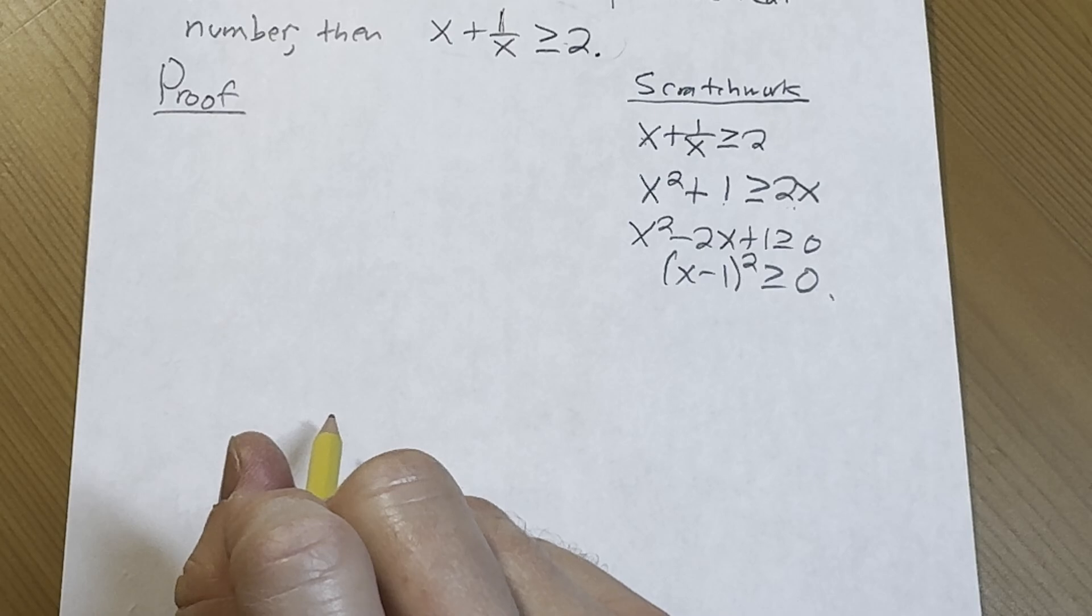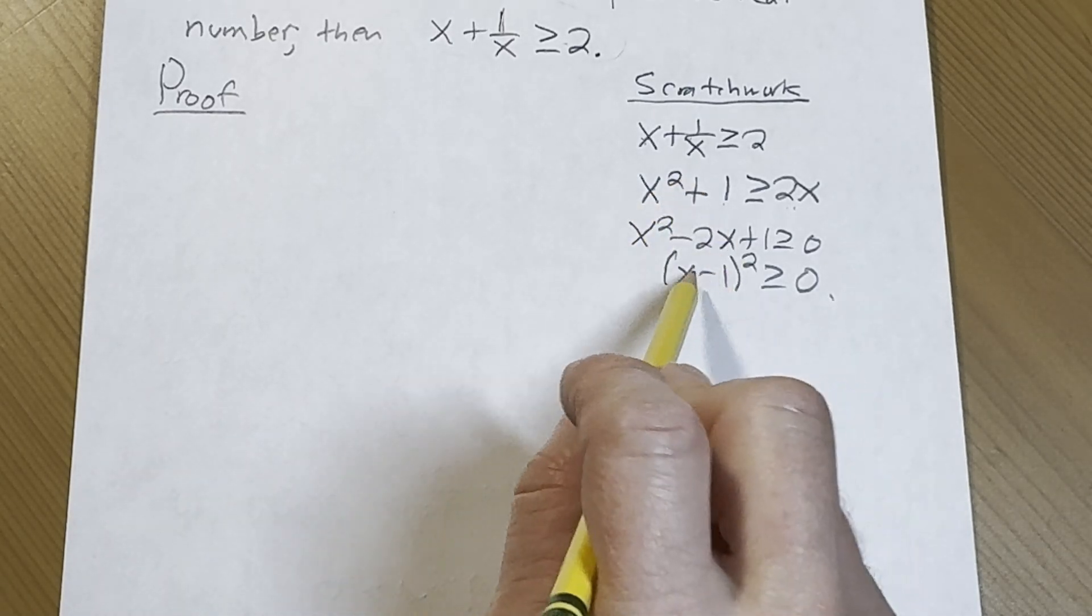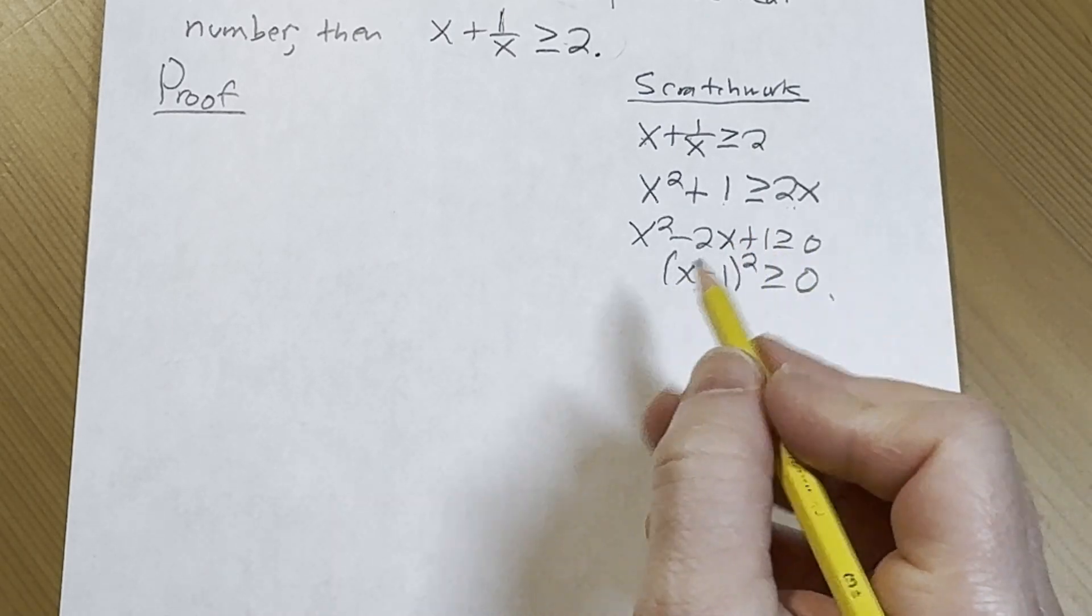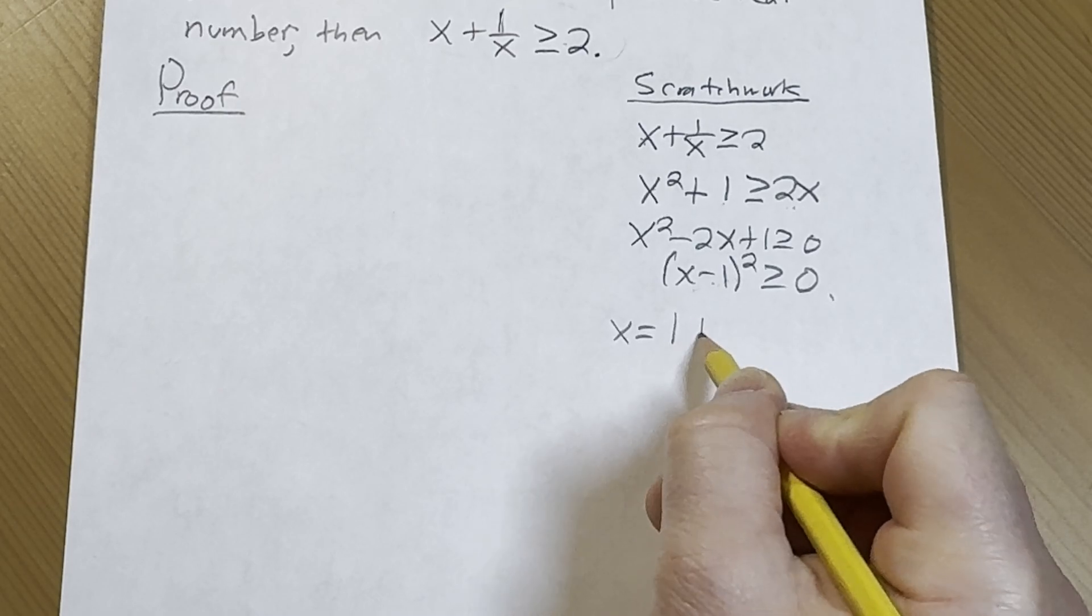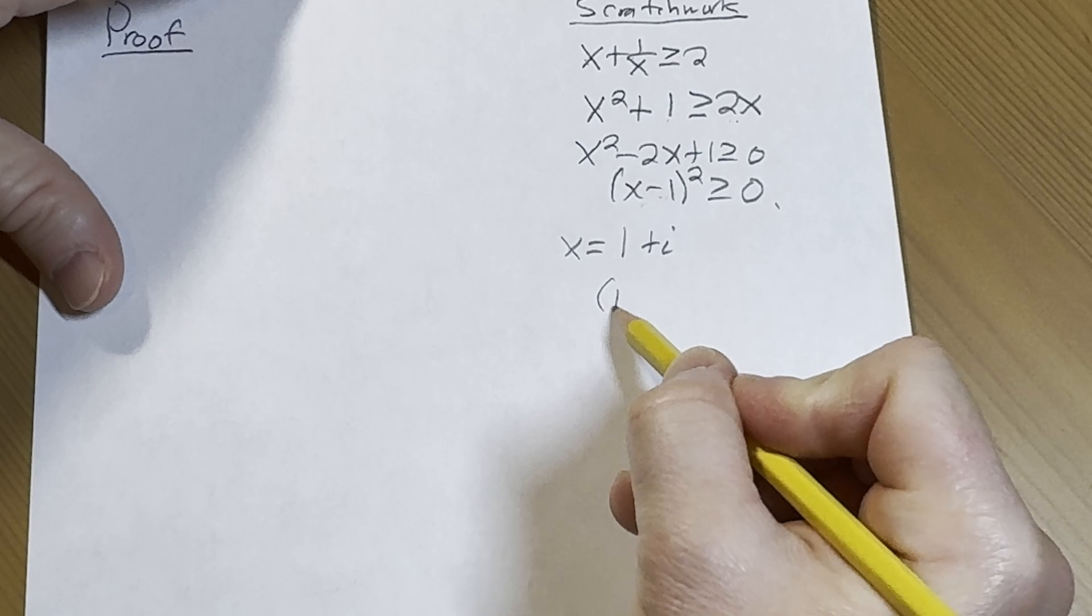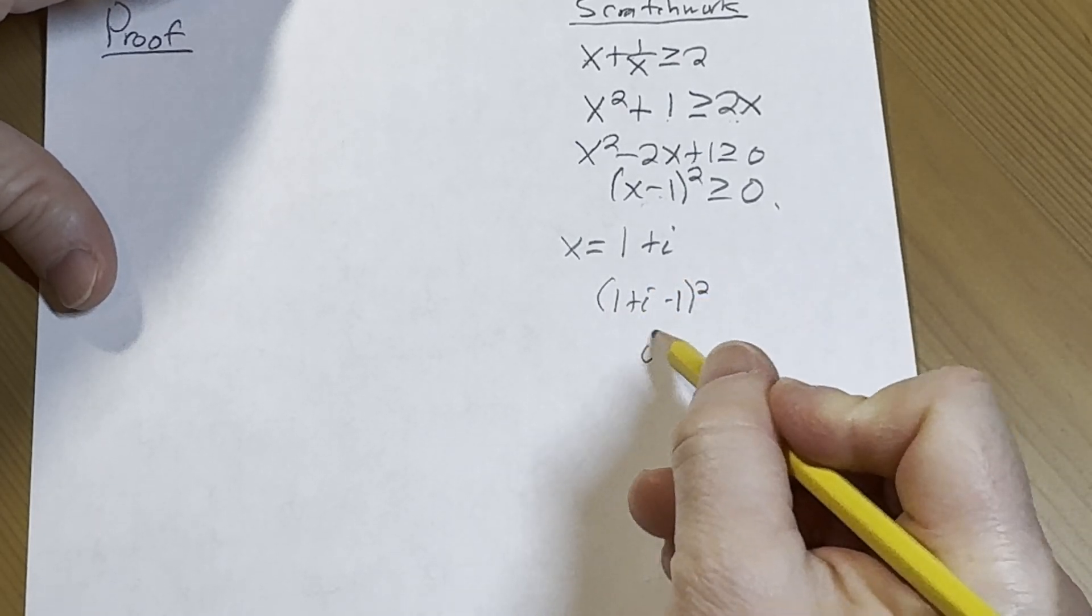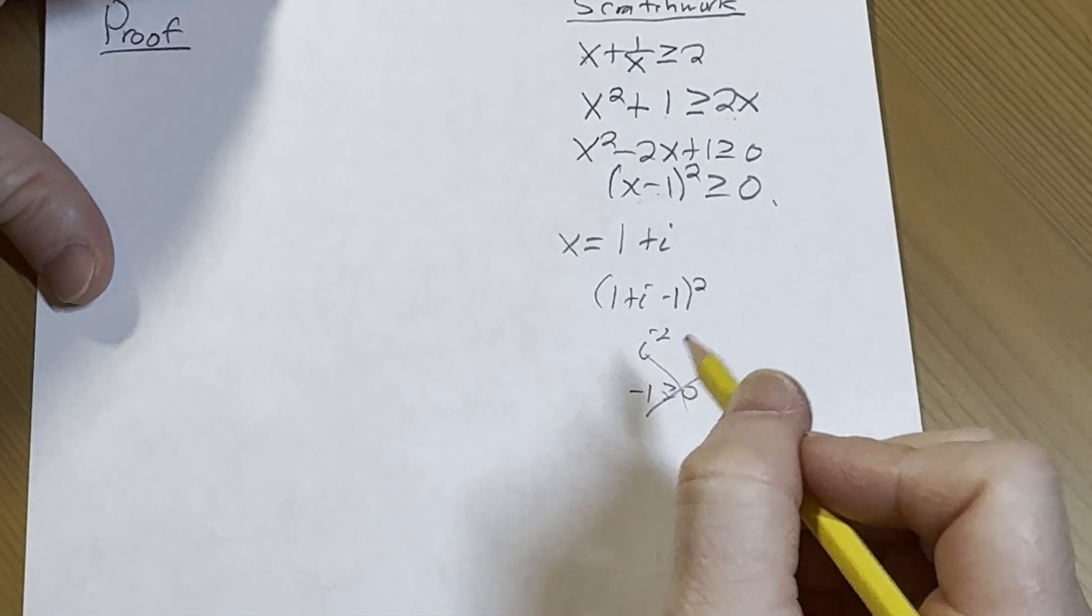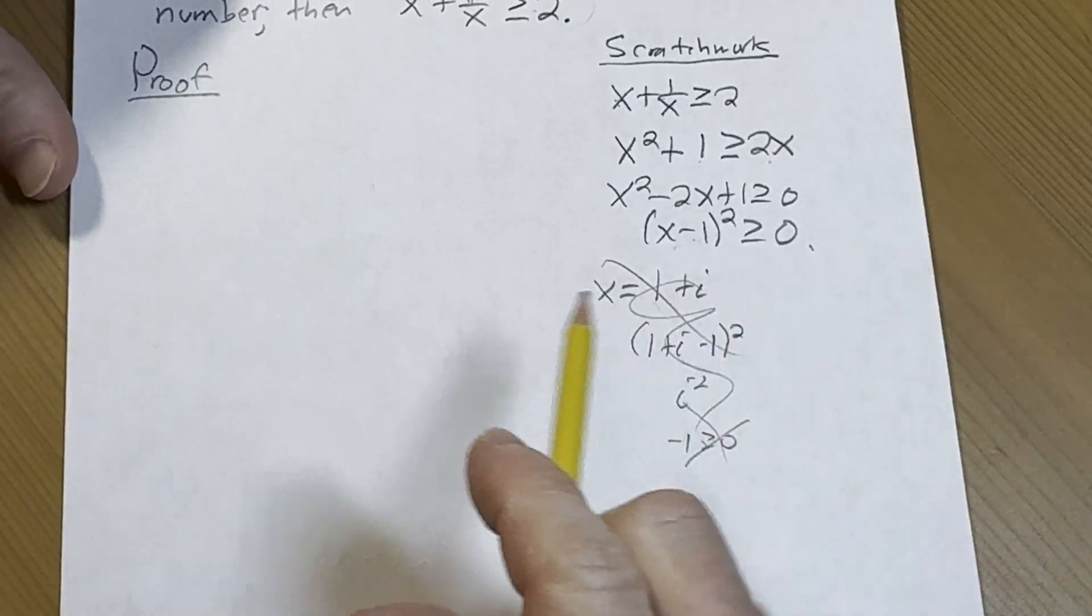Which is always true, right? That's always going to be true as long as x is a real number. Because if there's some complex stuff going on, for example, if x is equal to 1 plus i, then you would get 1 plus i minus 1 squared, which is i squared, which is negative 1. Is that greater than or equal to 0? No, it's false. But we have that x is a real number, right? So stuff like this is not going to happen.